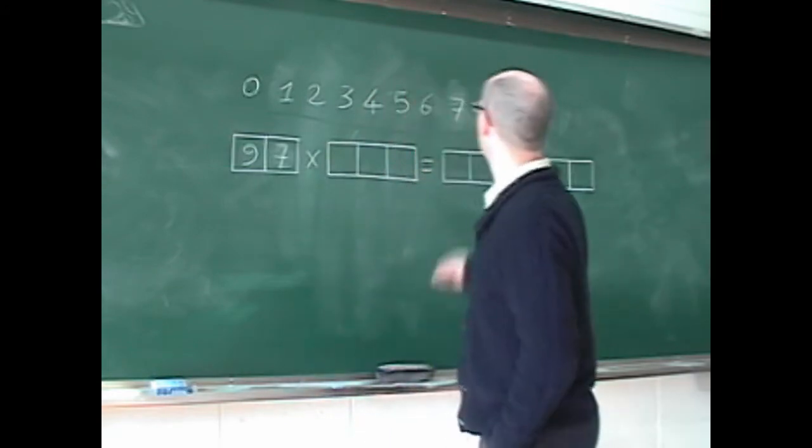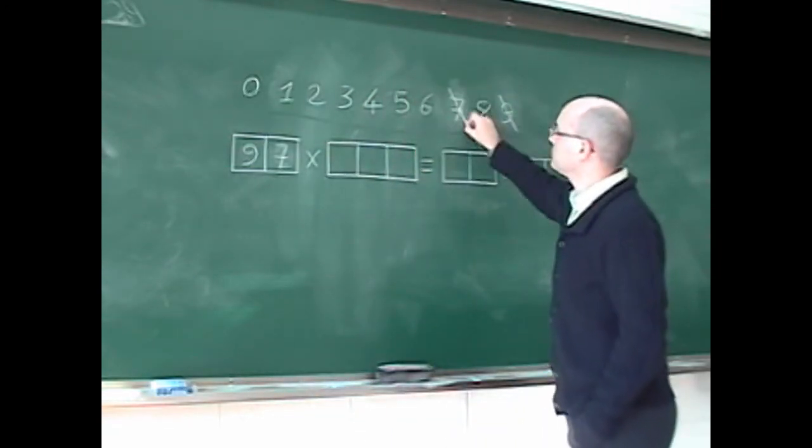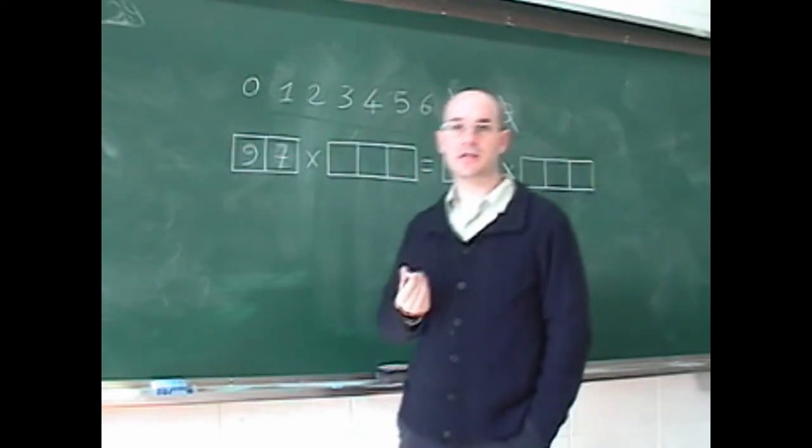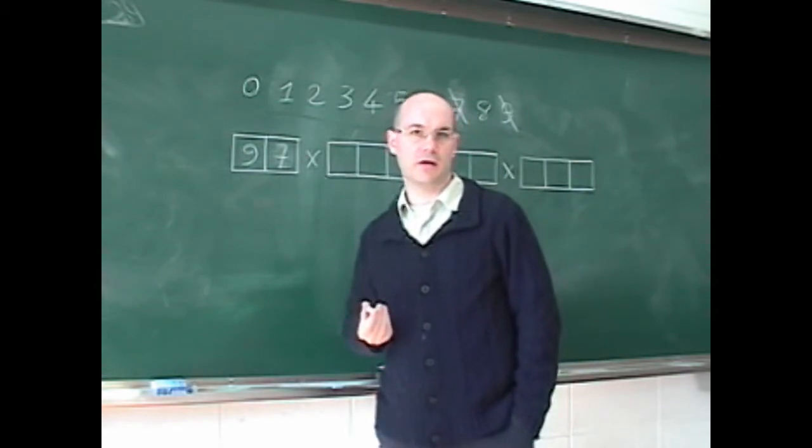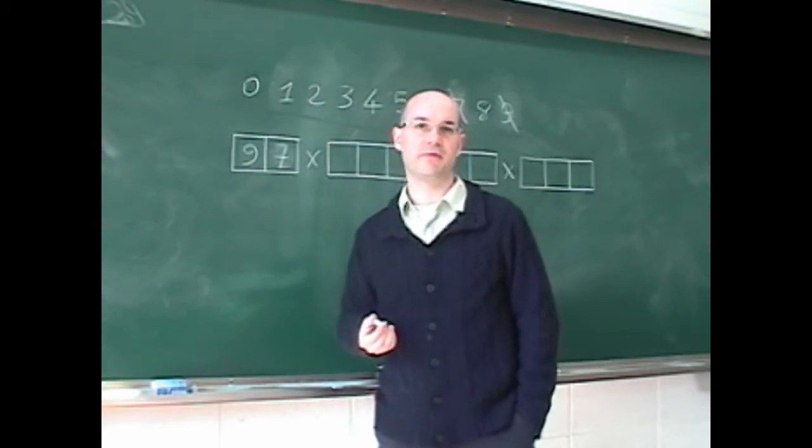97 is already here and the second hint is that at least one of those numbers is a multiple of 5.